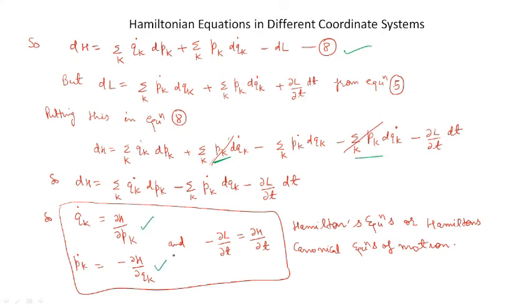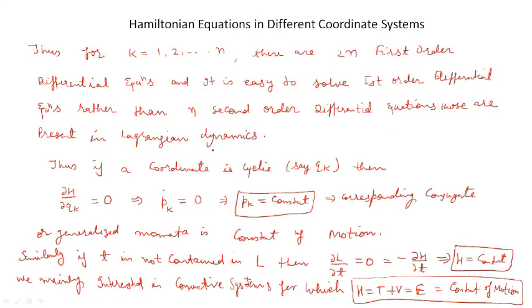These equations are called the Hamiltonian equations or Hamiltonian canonical equations. Thus if k runs from 1 to n, there will be 2n first-order differential equations in the Hamiltonian, whereas in the Lagrangian we have n second-order differential equations. So it is easier to solve 2n first-order differential equations rather than n second-order differential equations.